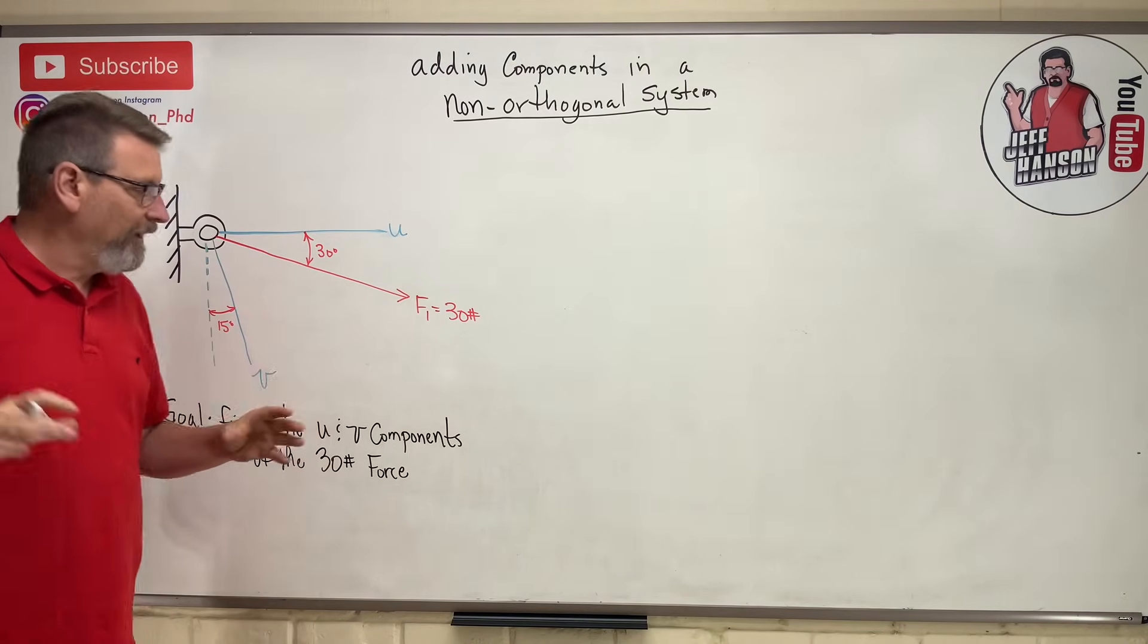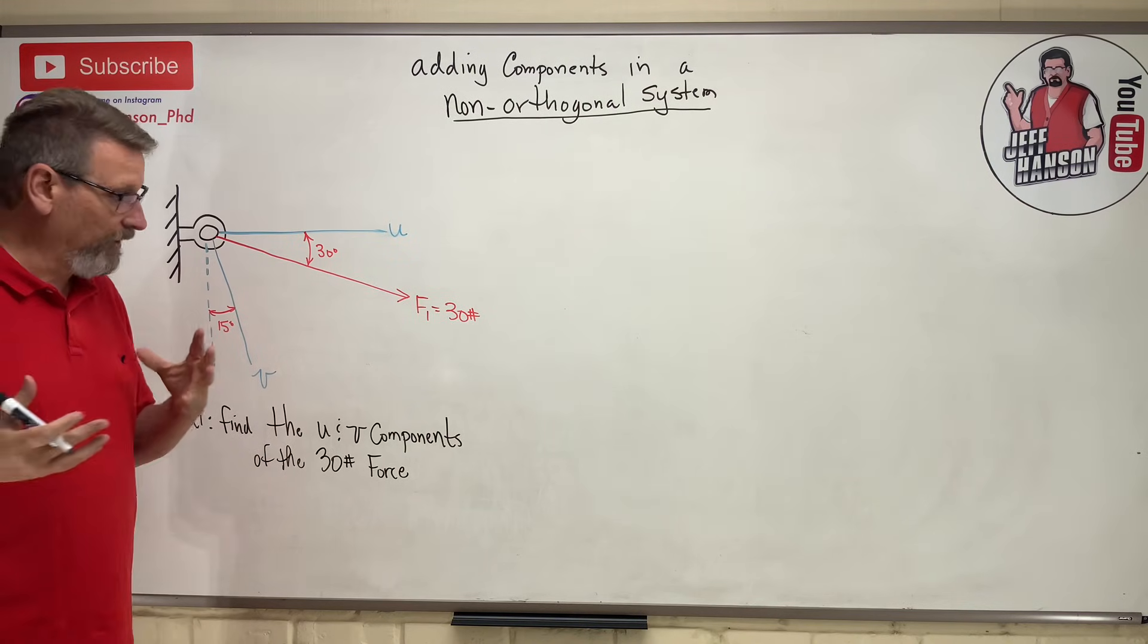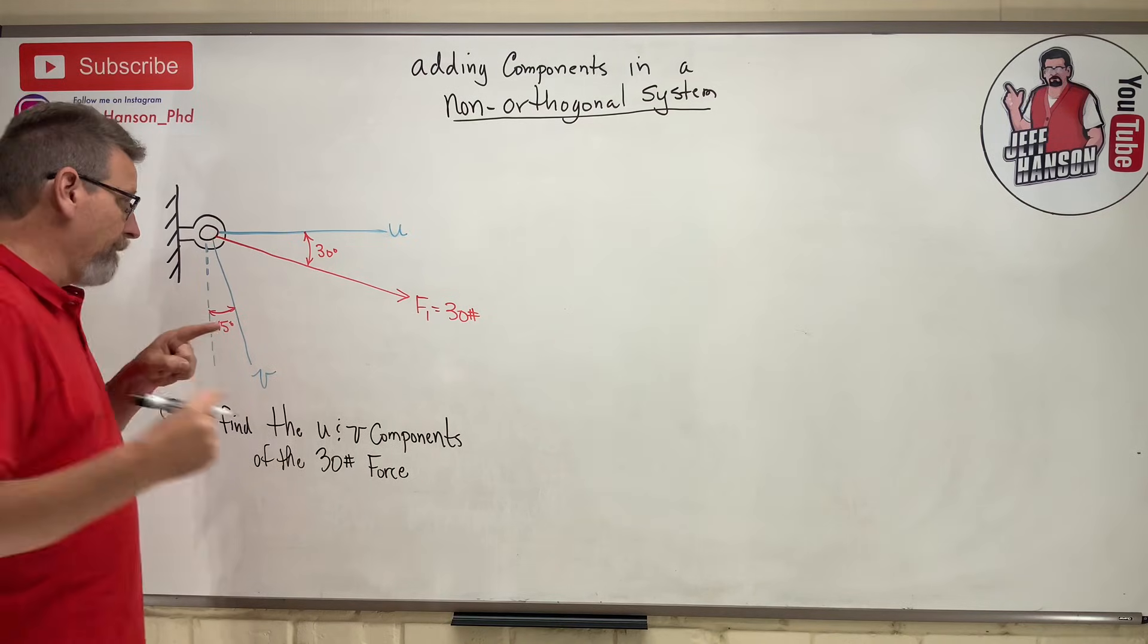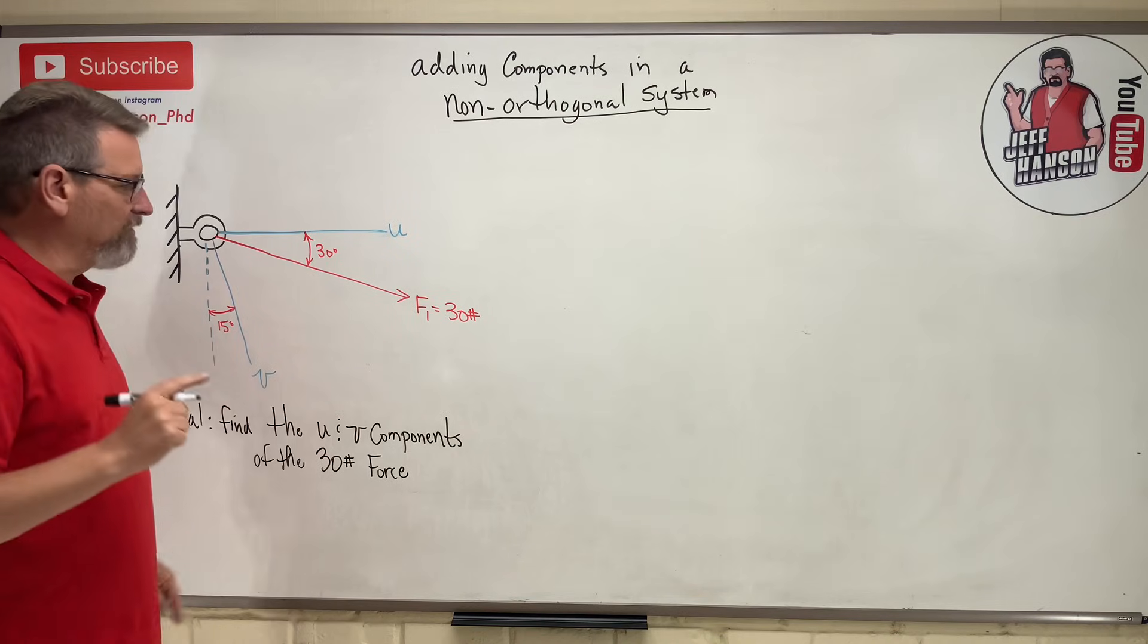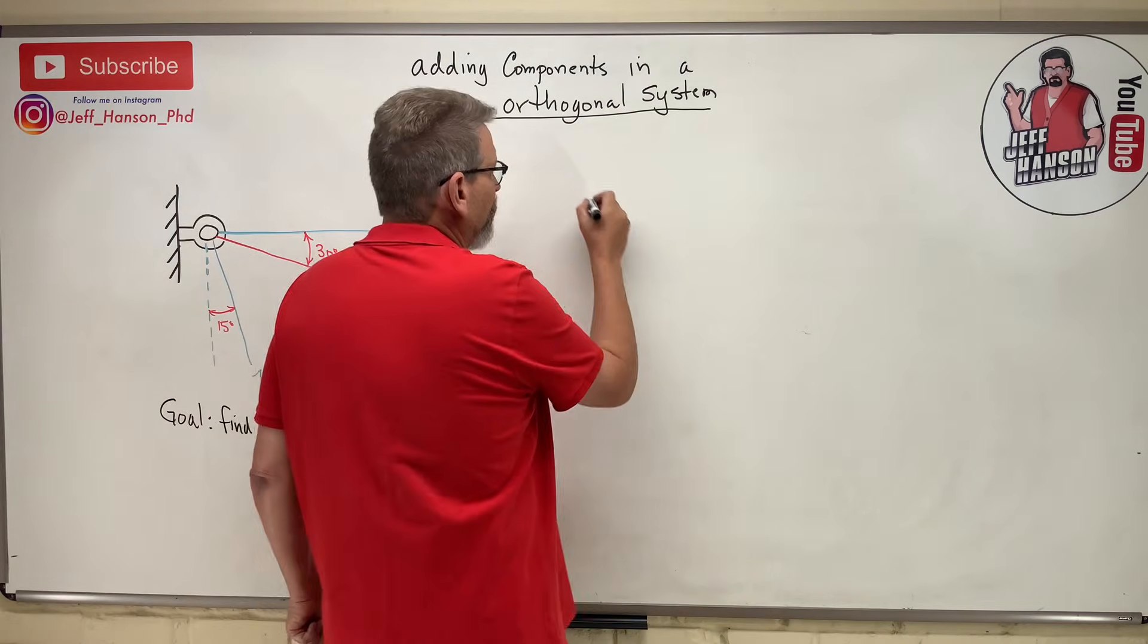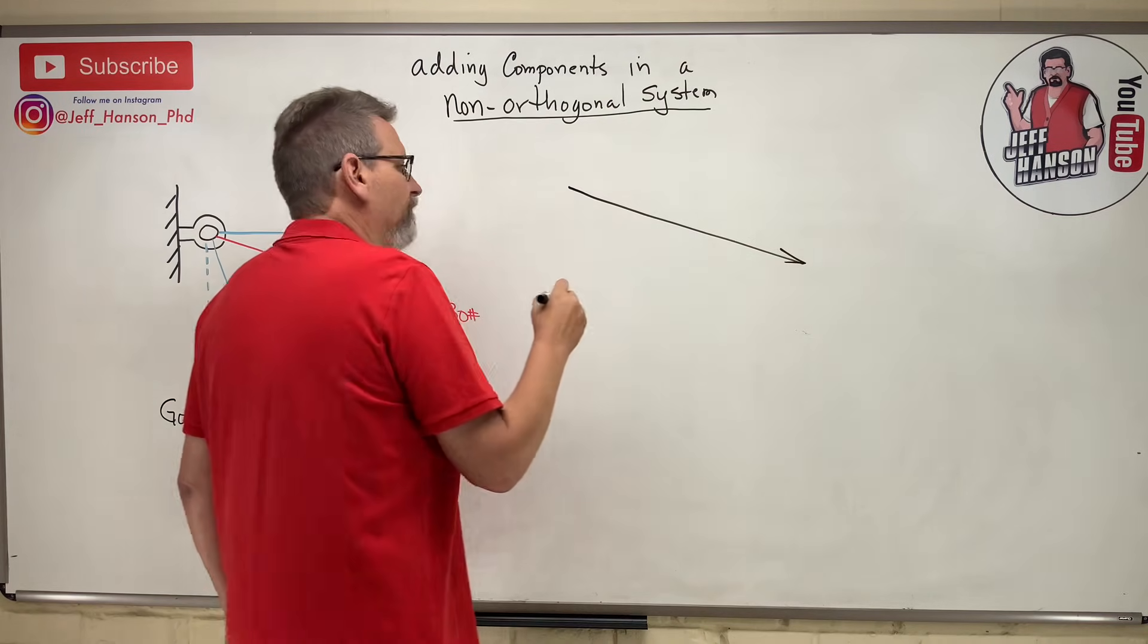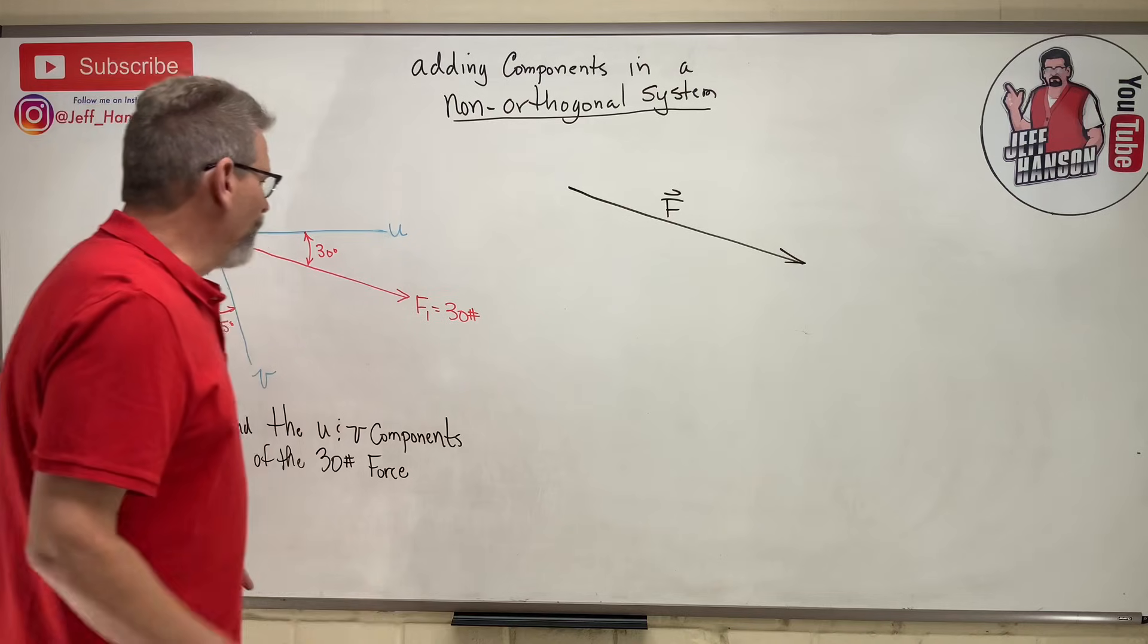Okay, so first thing I do is I want to sketch this. So here is my 30 degree vector - let's just say that's vector F. Now there's a couple ways I can get there, but here's what I think I'm gonna do: I think what I better do is come down this way and then go across to get there, right?